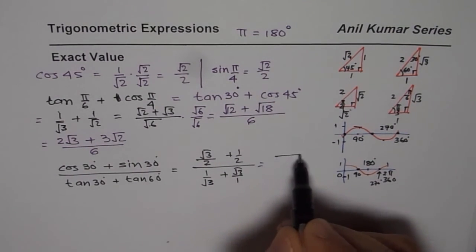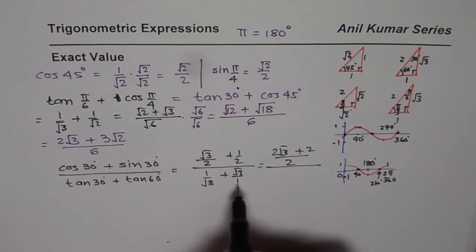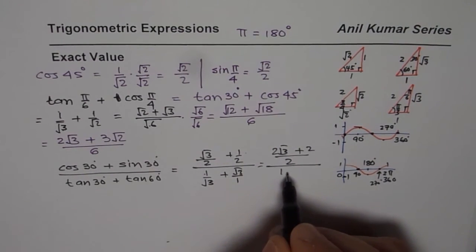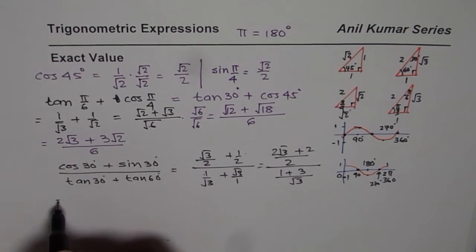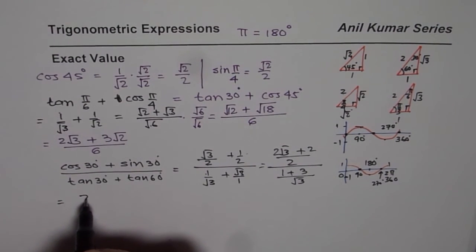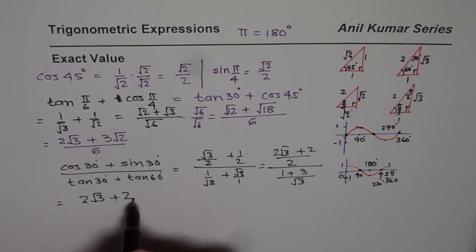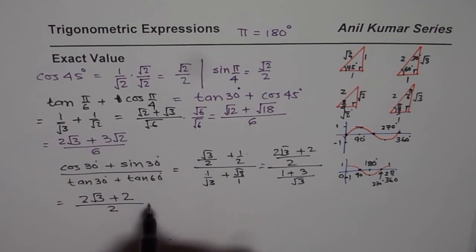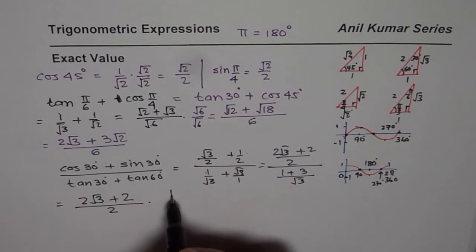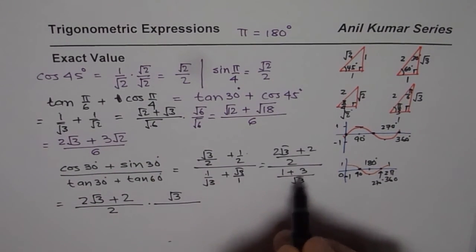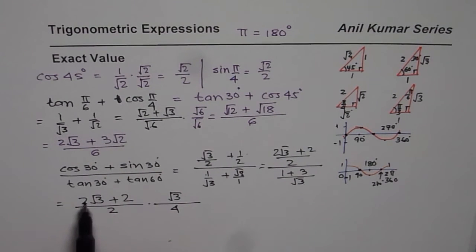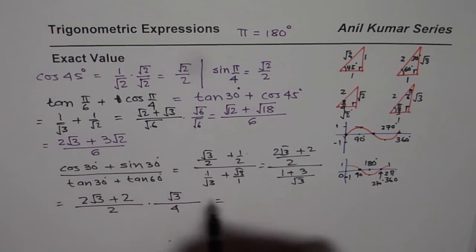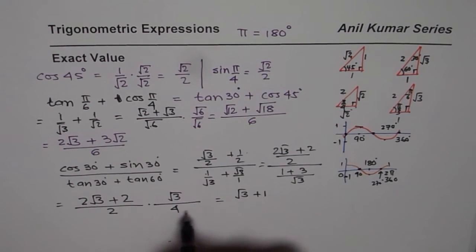Let's do it. So, we have a common denominator of 2. Here we get 2 times square root 3 plus 2 divided by. Here we get 1 times 1 plus square root 3 times square root 3 is 3 divided by square root 3. Now, that gives us, in the numerator, we have 2 square root 3 plus 2 and this denominator is right there, times dividing by this means multiplying by square root 3 over 1 plus 3 is 4.